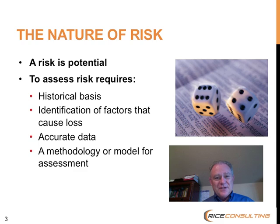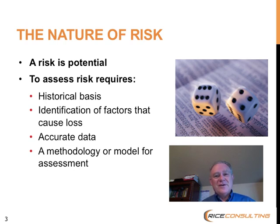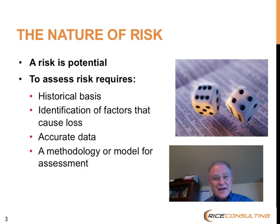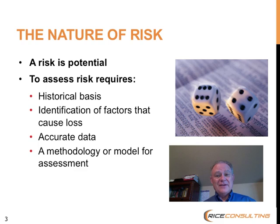Besides being a potential, there are a few things we need to know to intelligently assess risk. Once you've identified what some of the risks are, it's helpful to have some kind of historical basis. Using the car insurance example: insurers know that based on your driving habits, how much you drive, where you drive, the number of tickets and accidents you've had, your age, the value of your car, and where you live — all of that factors into your insurance rate. They know the combination of those factors creates a certain likelihood of loss.